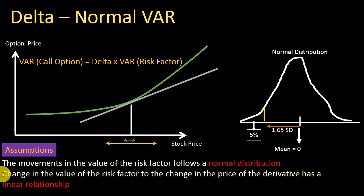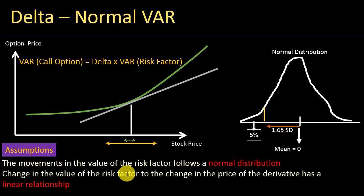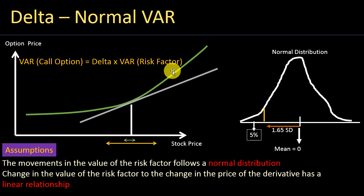The second assumption is that the change in the value of the risk factor to the change in the price of the derivative has a linear relationship — in other words, the slope is constant. We know this is not true for nonlinear derivatives. For example, the relationship between changes in option prices and changes in stock prices follows a curve, not a straight line. So you can see these two assumptions are quite questionable. Given these drawbacks, some firms still use the delta normal approach to estimate VAR at a very high level, but it is far from accurate.